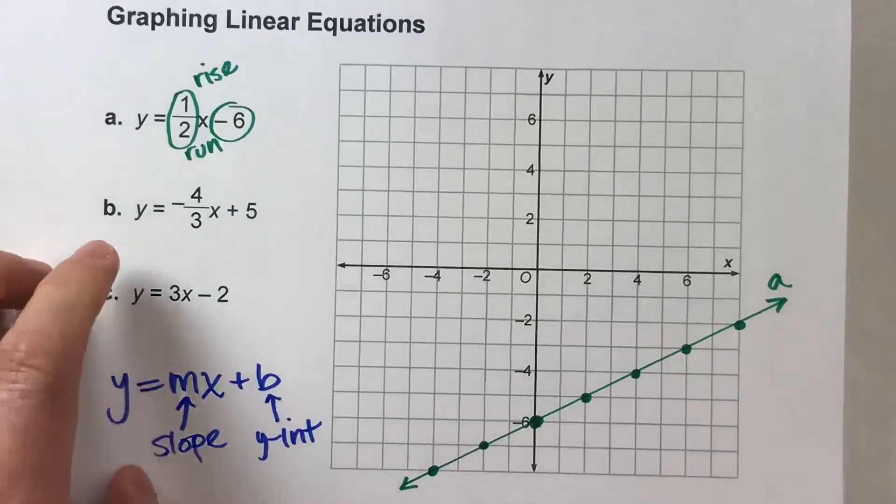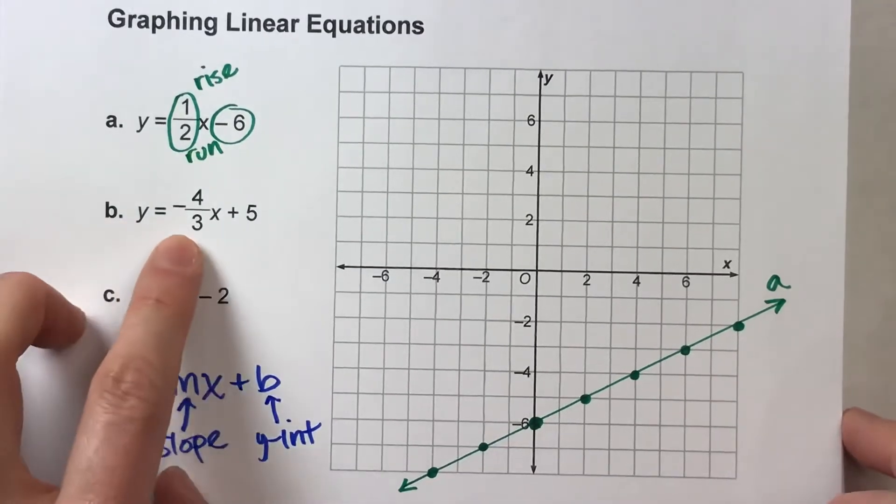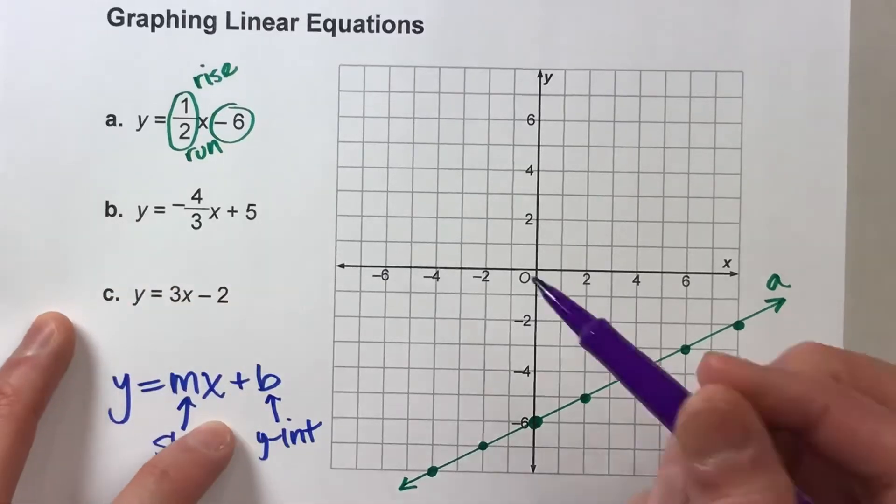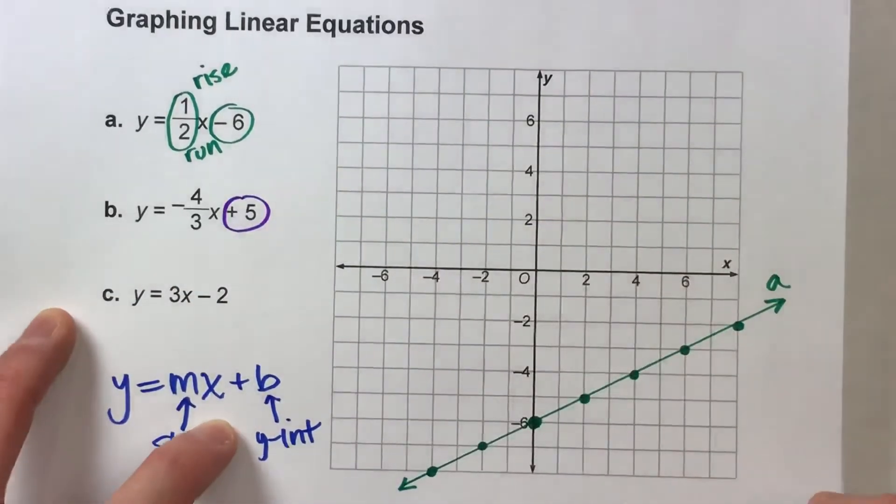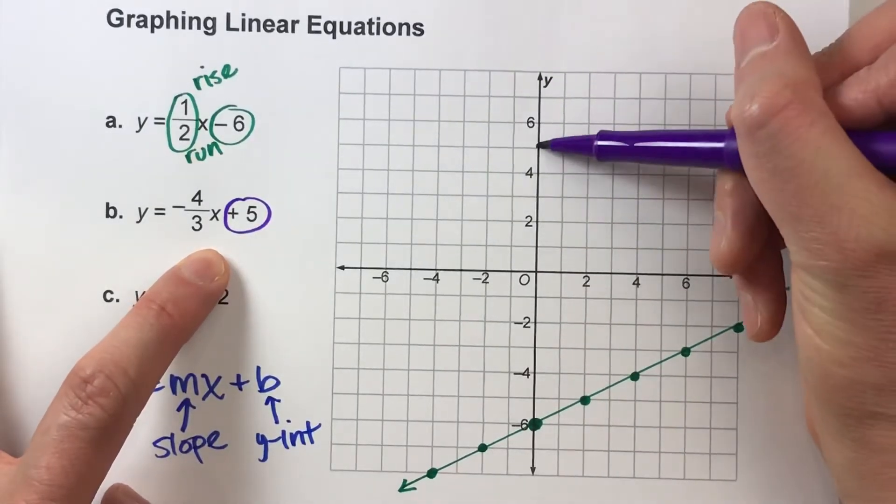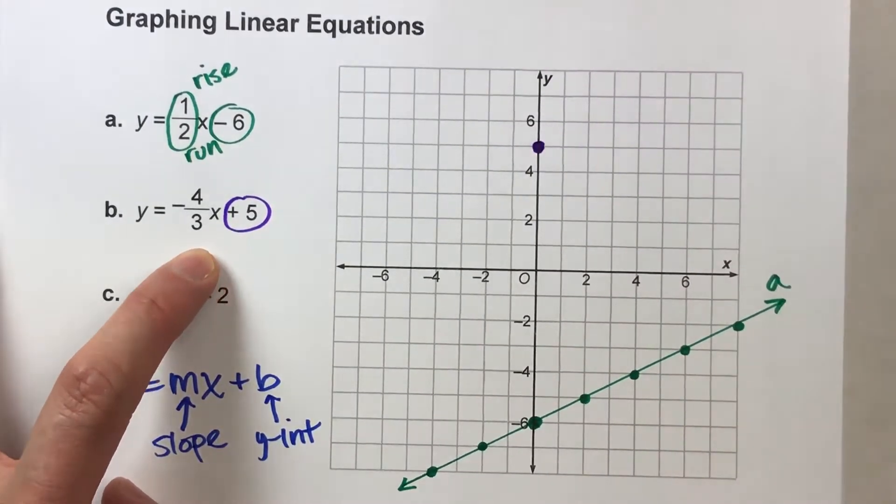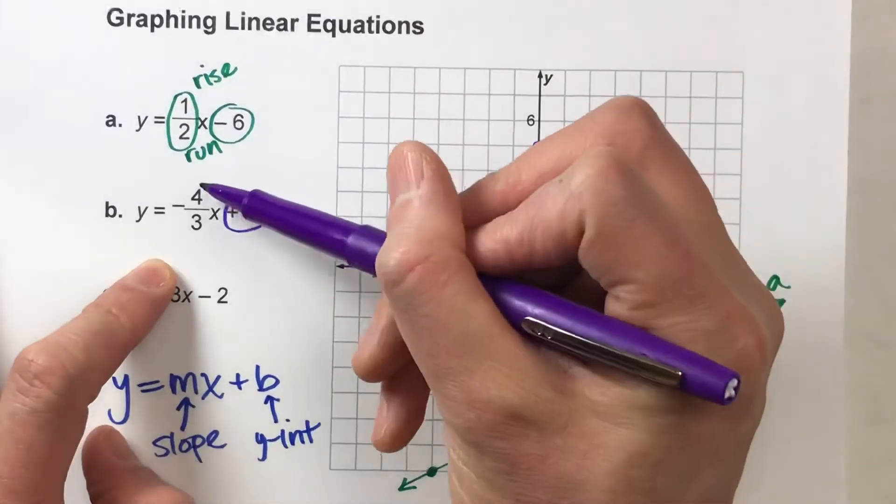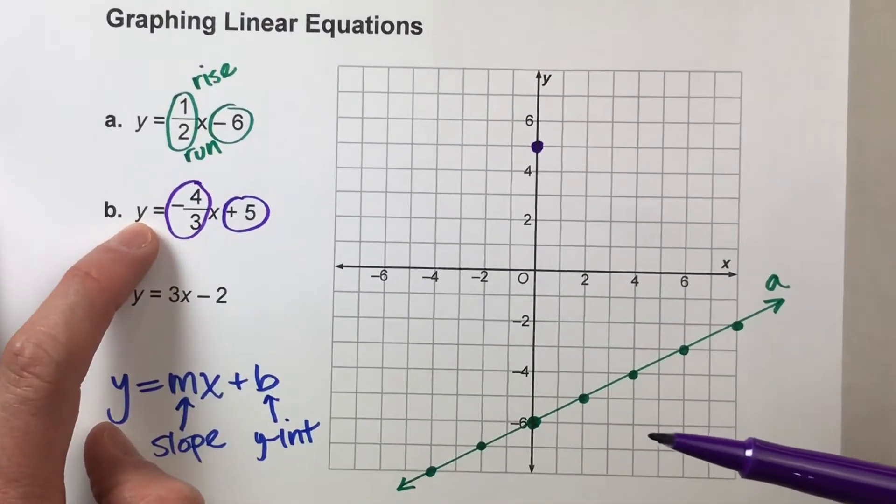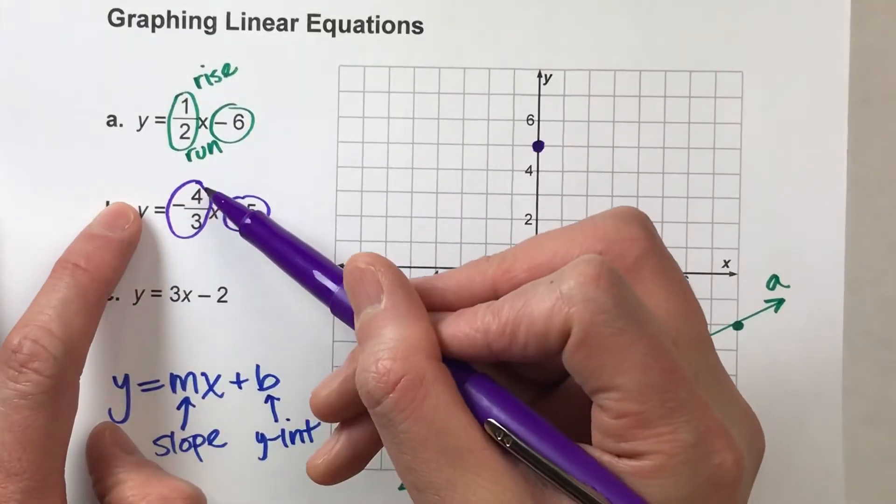Let's do another one. Here's B. Y equals negative 4 3rds X plus 5. I'll start with the Y-intercept. That's the positive 5. So on the Y-axis, I'm going to plot positive 5. My slope is the number next to X. In this case, it's a fraction, and it's a negative fraction this time. It's a negative 4 3rds.